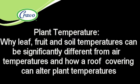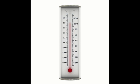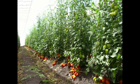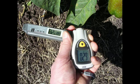Plant temperature: exploring why leaf, fruit, and soil temperatures can be significantly different from air temperatures and how a roof covering can alter plant temperatures. When speaking about temperatures, we all typically refer to air temperatures because that is what we measure. But when managing plants, can we optimize plant growth and development using air temperature only? And is the soil temperature, leaf, or fruit temperature of a plant the same as air temperature?